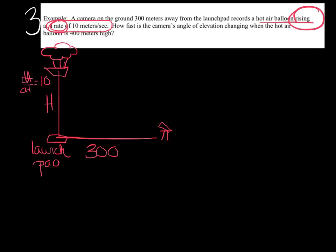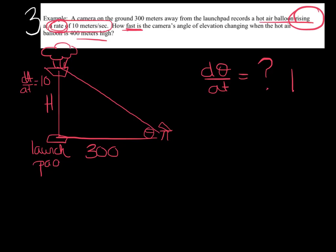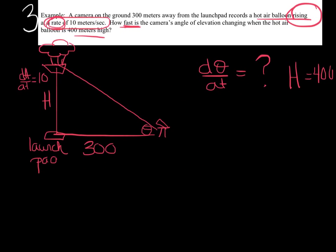How fast is the camera's angle of elevation changing? So I'm looking for dθ/dt — the rate that it's changing — specifically when the balloon's height is 400 meters. My goal is to pick an equation that relates all three pieces together. I need an equation that represents the angle, and the only thing that comes to mind when talking about an angle is a trig function: sine, cosine, or tangent.